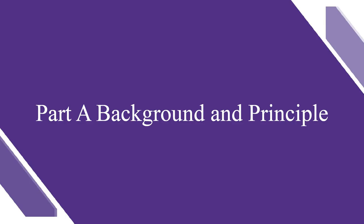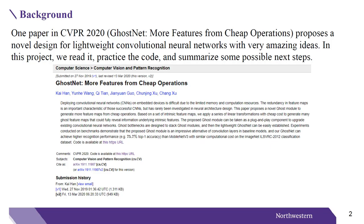Let's begin with the first part: background and principle. While browsing through the CVPR papers, I came across a paper entitled 'GhostNet: More Features from Cheap Operations.' It proposes a novel design for lightweight convolutional neural networks. In this project, we would read this paper, implement a part of the theory, and conclude with a summary.